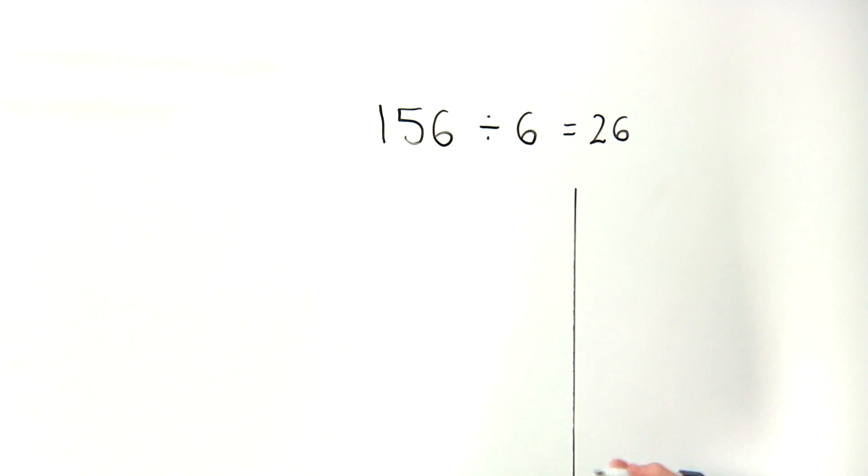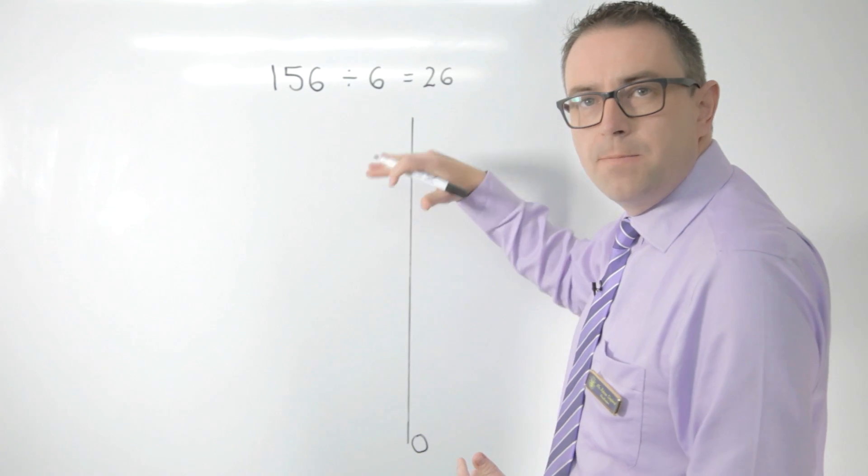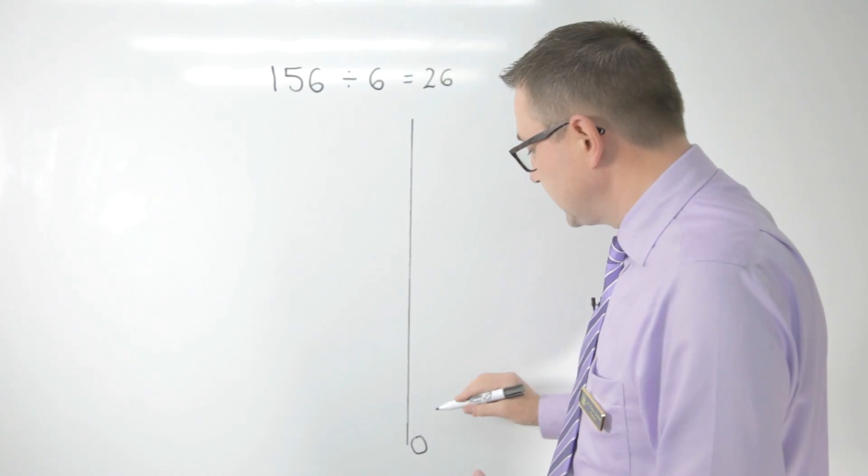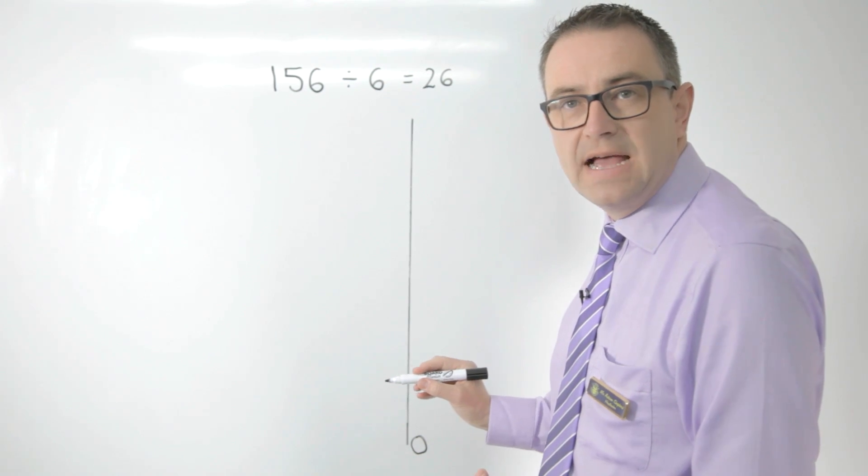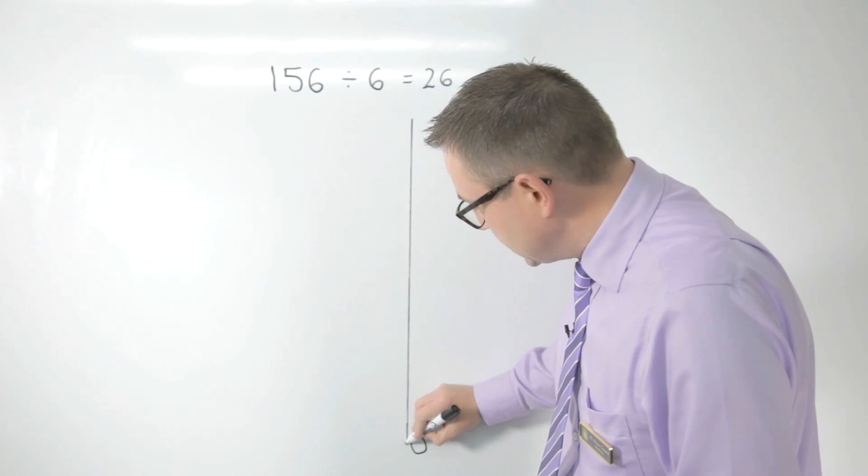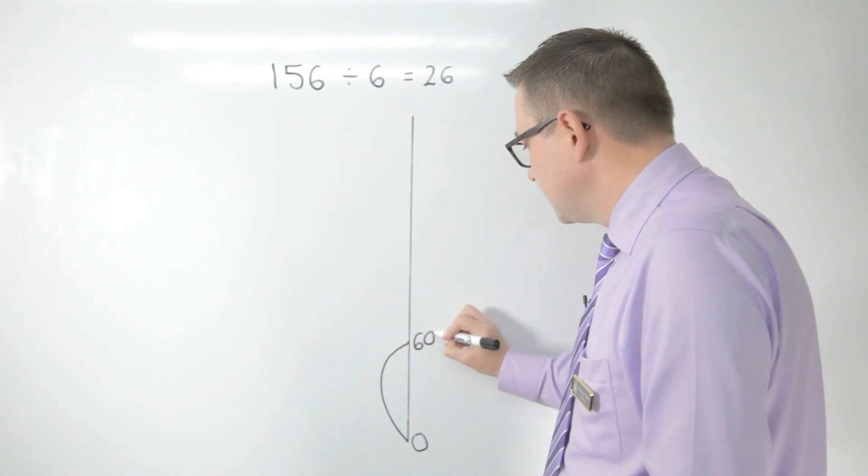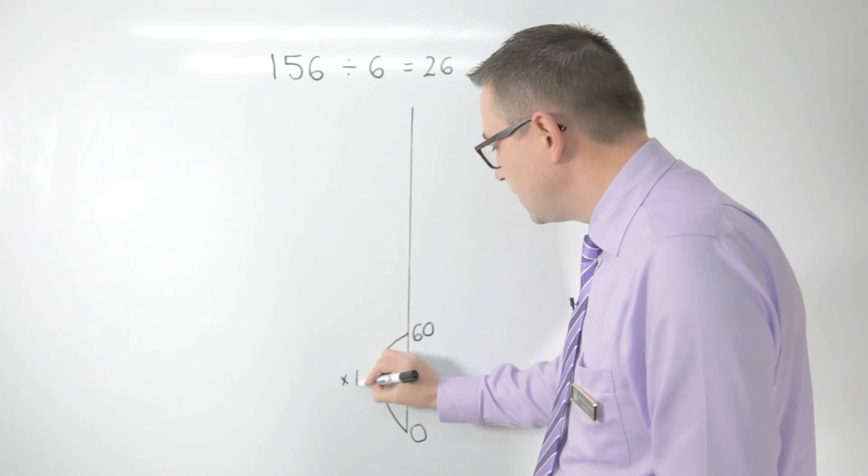So once again I'm still going to use the knowledge that I have and that language. So I know that I can jump straight to 60, which is 10 lots of 6.